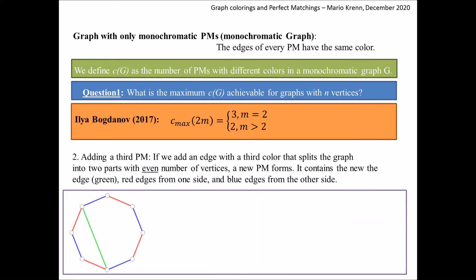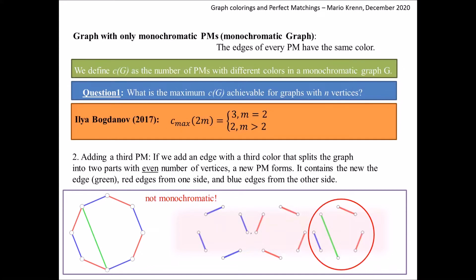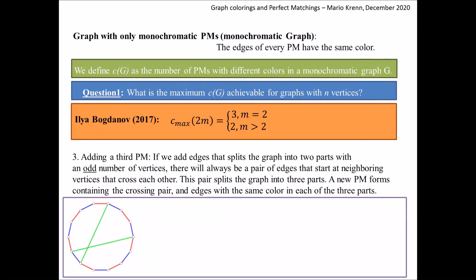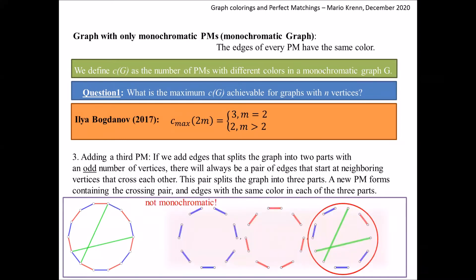Second, let's try to add a third perfect matching. If we add an edge that splits the graph into two parts of even vertices, a new perfect matching emerges — it consists of the new edge plus blue edges from one side and red edges from the other side. That works in every case. Third and finally, we know we can only add edges that split the graph into an odd number of vertices. But if we add such edges, there will always be a pair of neighboring edges that cross each other, splitting the graph into three parts and always creating a new non-monochromatic perfect matching.